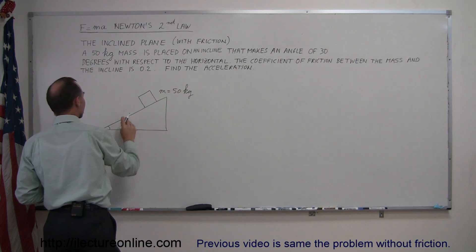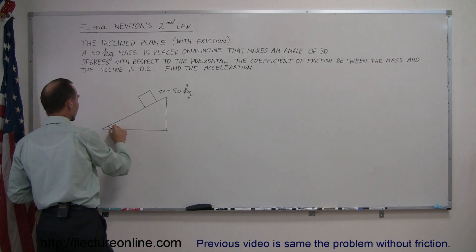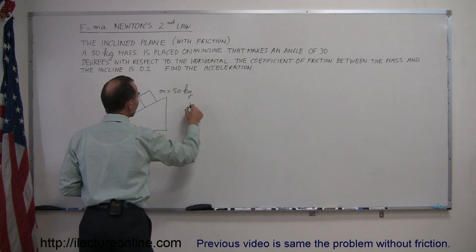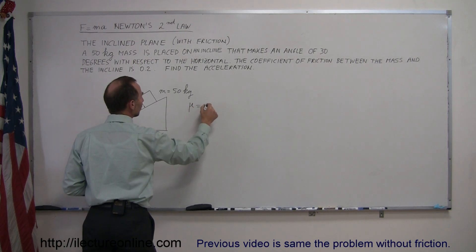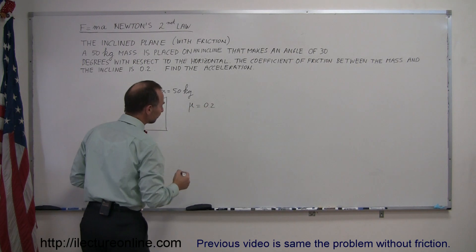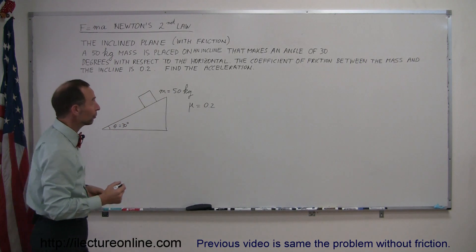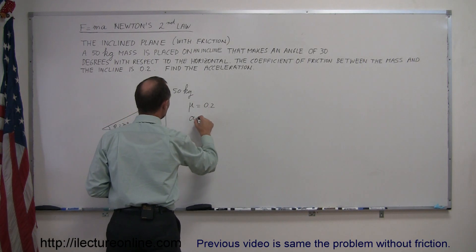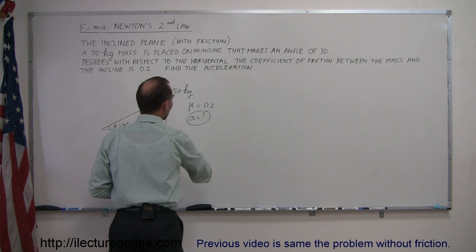The angle that the inclined plane makes with the horizontal theta is equal to 30 degrees. And we can also mention that mu, mu stands for the coefficient of friction, is equal to 0.2. And we're supposed to find acceleration, a is equal to question mark. That's what we're looking for.